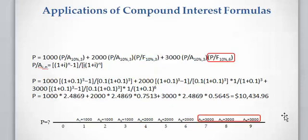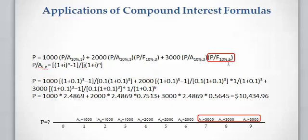Now for the last three payments — the first one is at the end of year seven. Similarly, if we use the factor P/A at 10 percent with three payments, this gives us the present value at the end of year six. But we want it at year zero, so we need to discount this value for six more years. That's why we multiply by the factor P/F(10%, 6), six years of discounting.